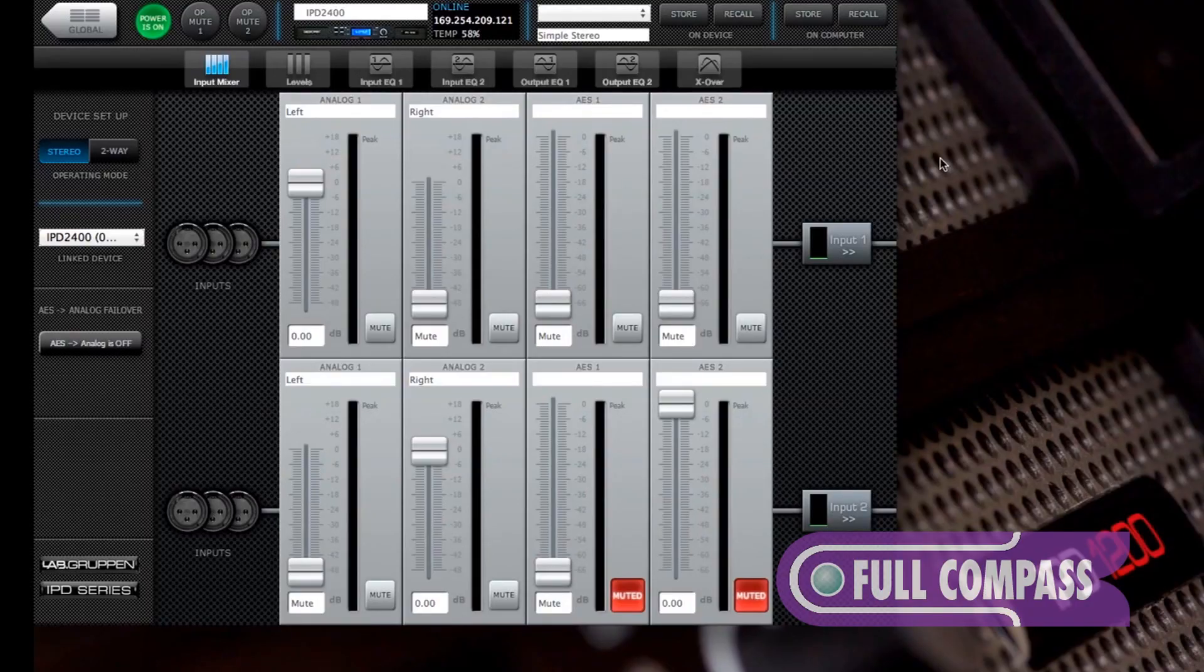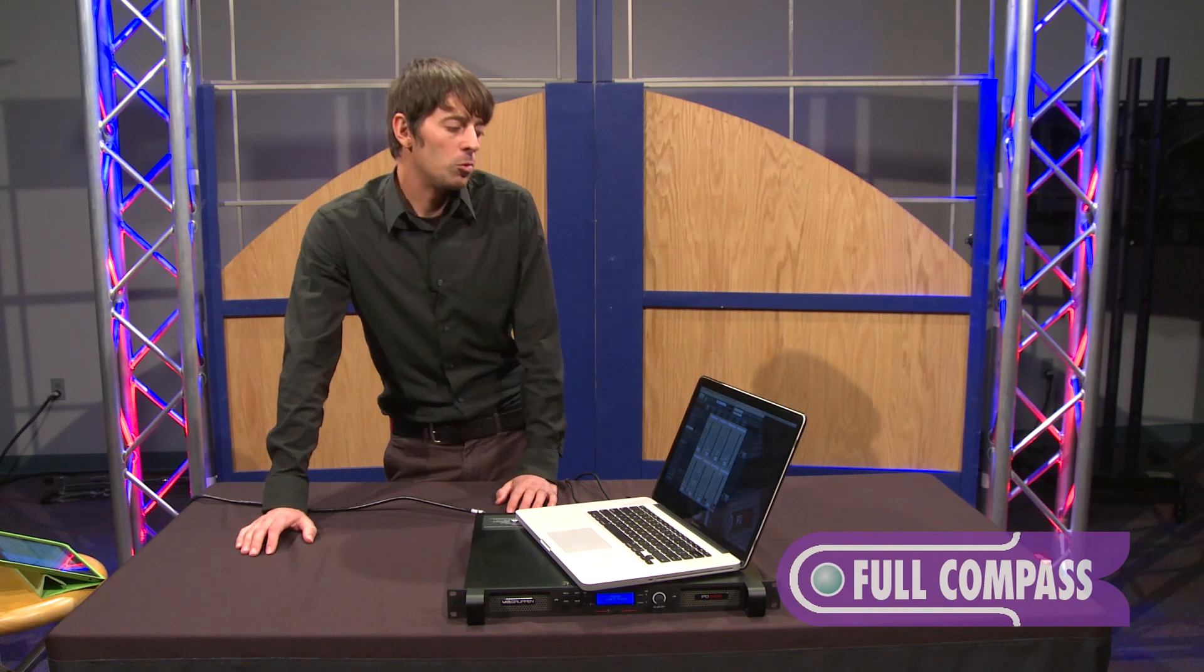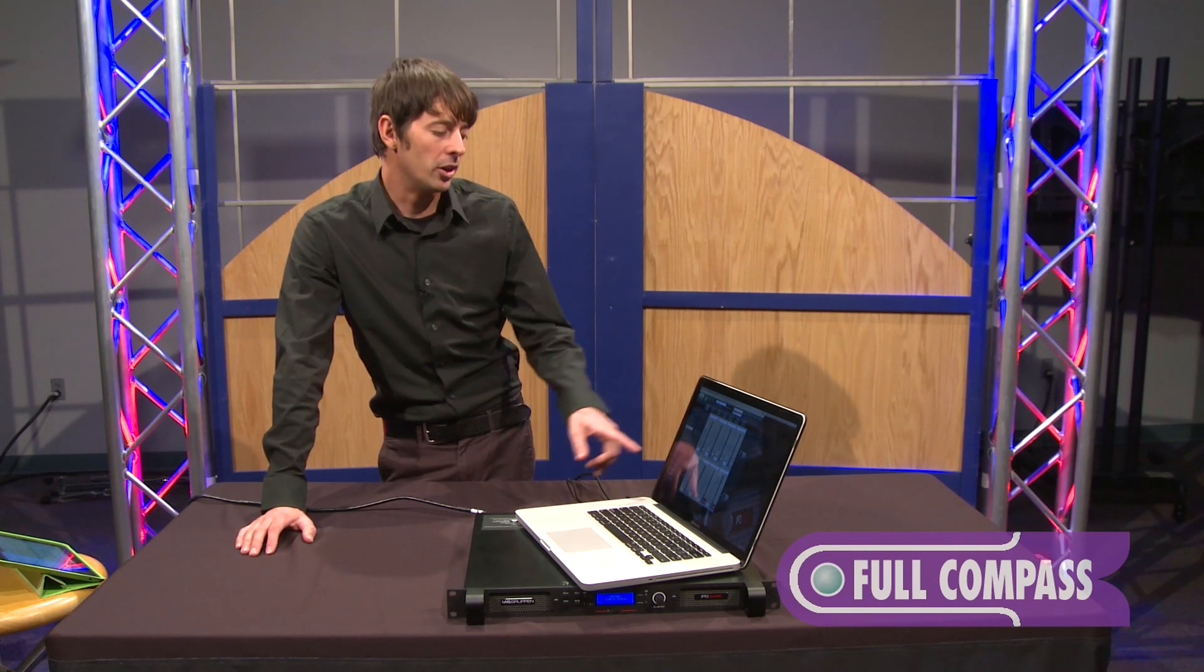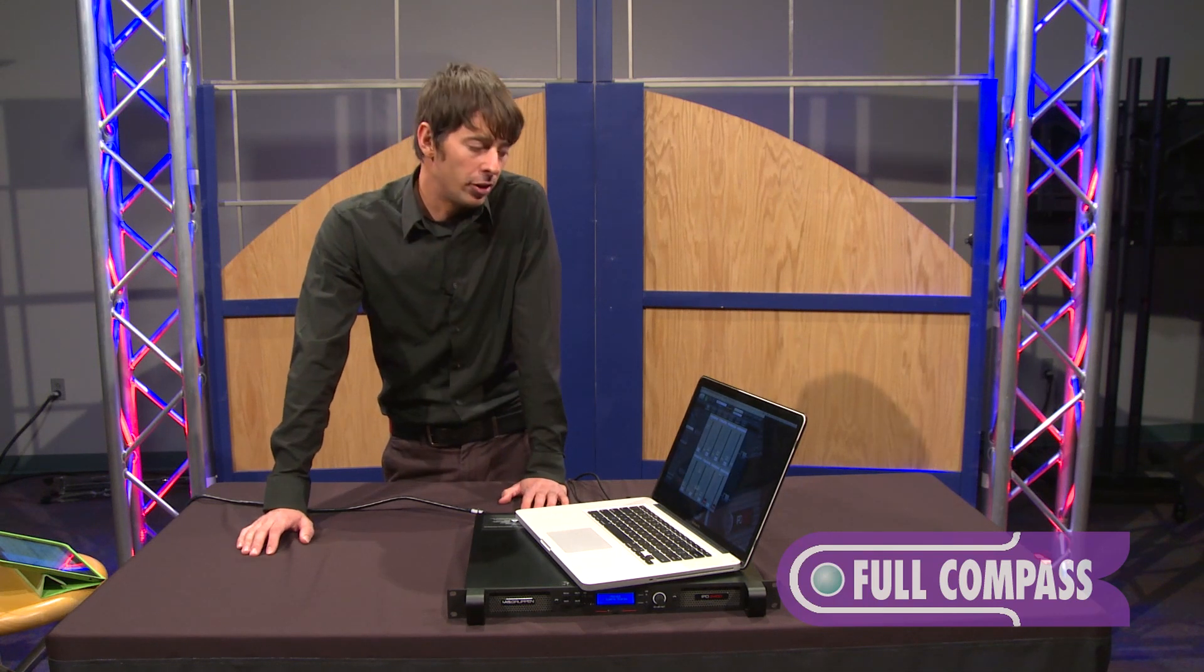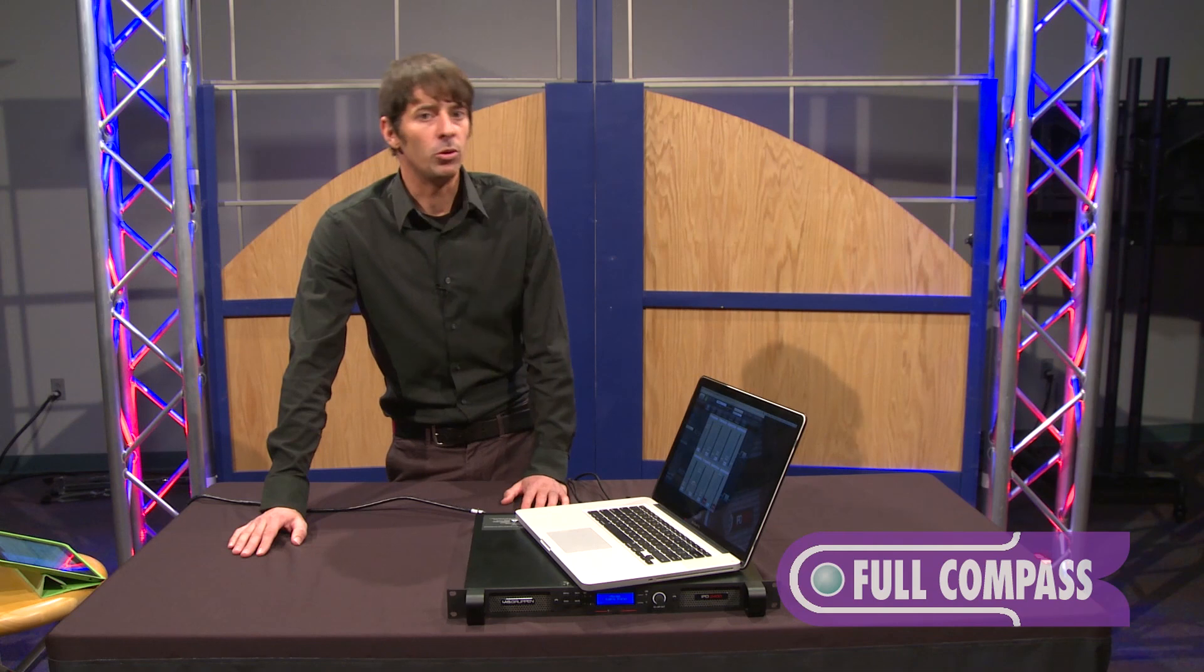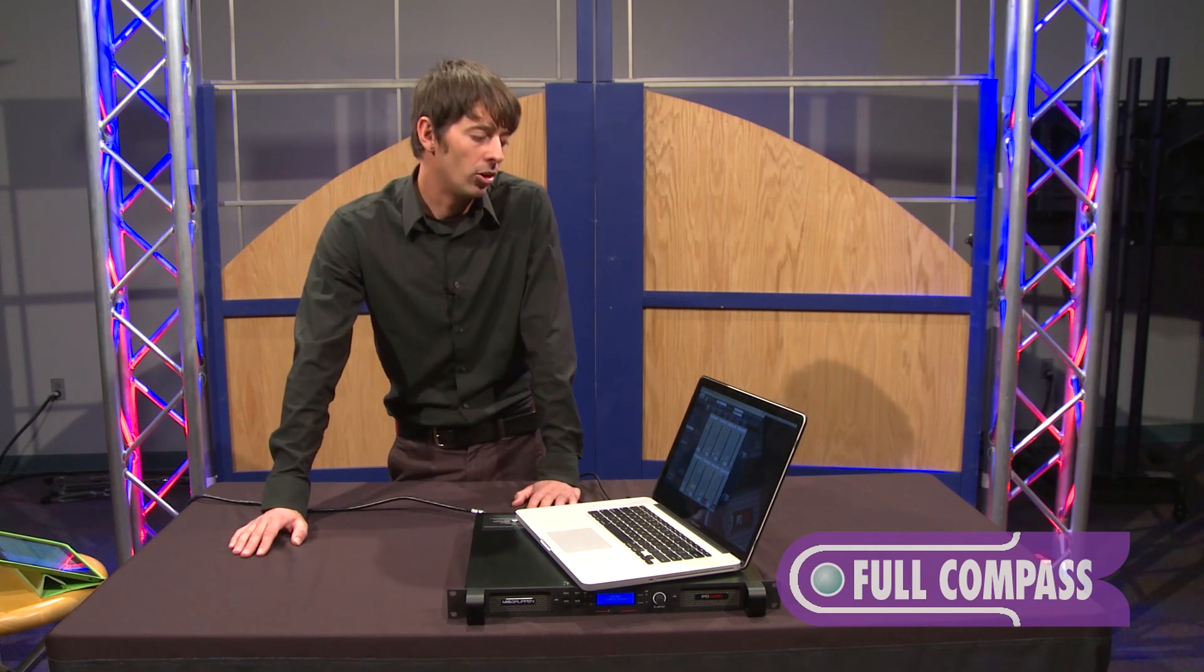And what we see right here are our four inputs. You have your two analog inputs and your two AES inputs. And you can either use your input mixer to mix between those four signals and send them to either channel or you could enable the AES to analog failover. So say your AES signal dropped out for some reason, it would then automatically switch over to the analog signal.